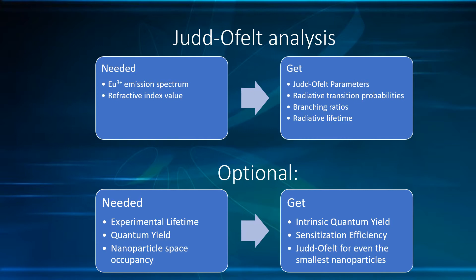For the specific case of nanoparticles, if the nanoparticle is much smaller than the wavelength of light, there is a workaround to do Judd-Ofelt analysis if the fraction of the space occupied by the nanoparticles is known.